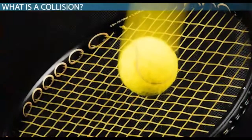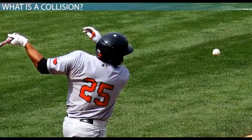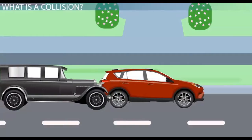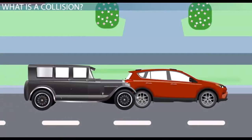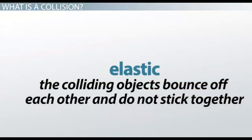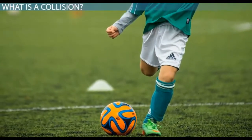We can classify collisions into one of two types depending on what happens to the objects immediately after the collision. One, if the collision is inelastic, then the colliding objects stick together after the collision. The car crash you witnessed and the collision you had with your friend while ice skating would both be inelastic collisions. In contrast, if the colliding objects bounce off each other and do not stick together, then the collision is considered to be elastic. Hitting a baseball or kicking a soccer ball are examples of elastic collisions.